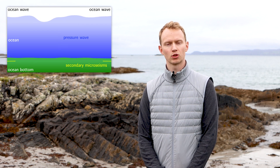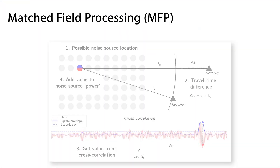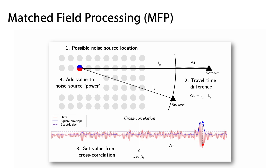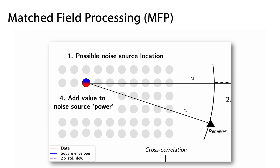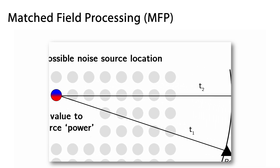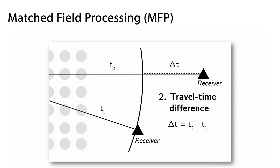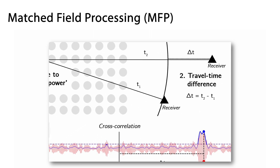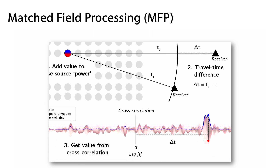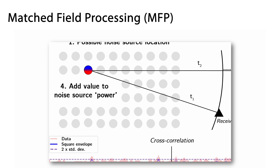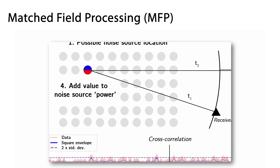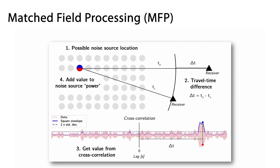But how can we use seismic data to locate these dominant noise sources? One efficient data-driven method is constant velocity match field processing. For a possible noise source location, we calculate the expected travel time difference for a station pair. The travel time difference tells us at which lag in the cross-correlation we expect a signal if there is a source at that particular location. We take the value of the square envelope of the cross-correlation and add it to the noise source power of that location. We repeat this for all possible noise sources in station pairs to obtain a probability distribution of where the dominant noise sources are.